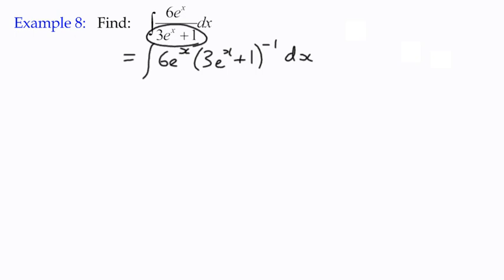Now we've got things looking more familiar. We've got a composite function here, and the 6e^x is a kind of derivative of the inside function here.